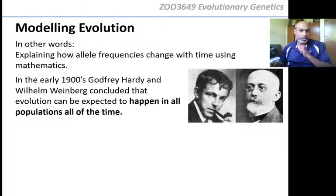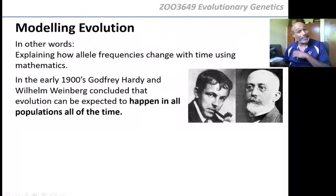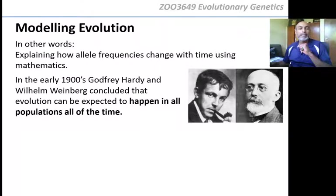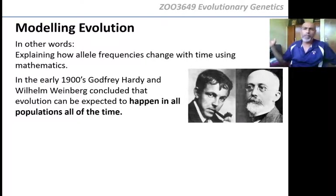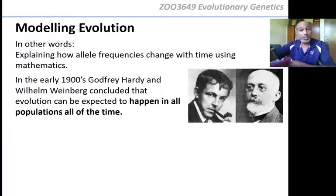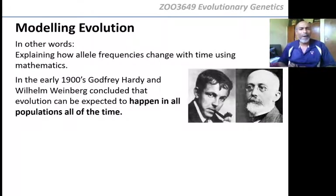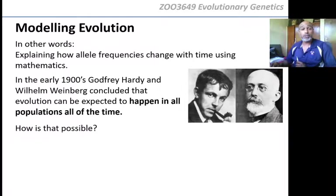Those two guys you see in the picture — one is Hardy and the other one is Weinberg. They're black-and-white pictures because it was a long time ago before color pictures came. Jeffrey Hardy was an English guy and Weinberg was a German, and both of them figured out that you can expect evolution to be happening in all populations all the time. Because when is evolution not happening? We are always in the process of struggling to survive, finding a mate, having kids, and passing genes to the next generation — that's a constant process, day in, day out.